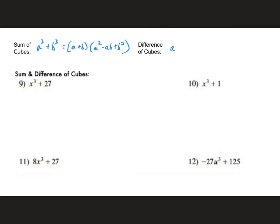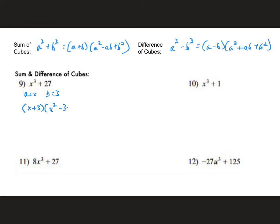For the difference of cubes — subtracting two things raised to the third power — the formula is (a − b)(a² + ab + b²). The trinomials in these formulas won't factor further — trust me on that. For the first example, x³ + 27: a = x and b = 3 (since 3³ = 27), so we get (x + 3)(x² − 3x + 9). Trying to factor this further will only lead to heartbreak and misery.